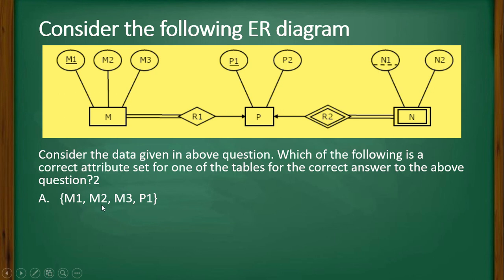Option A is M1, M2, M3, and P1. So you can see here these three attributes are there, and P1 is there. Option B is M1, P1, N1, N2. Option C is M1, P1, N1. Option D is M1, P1.